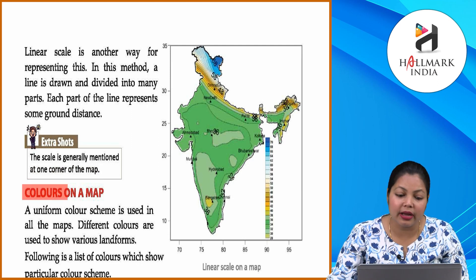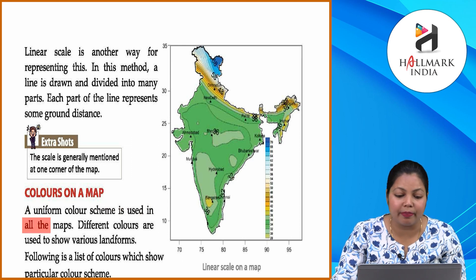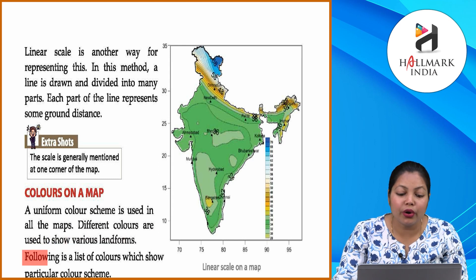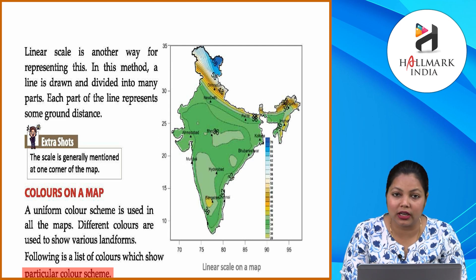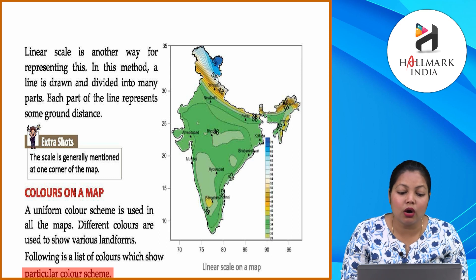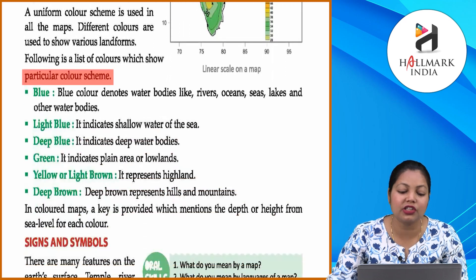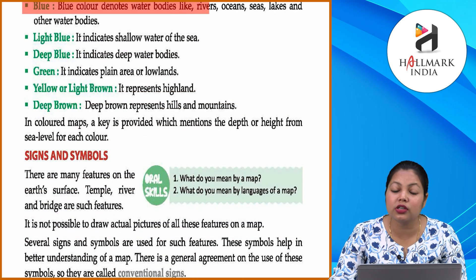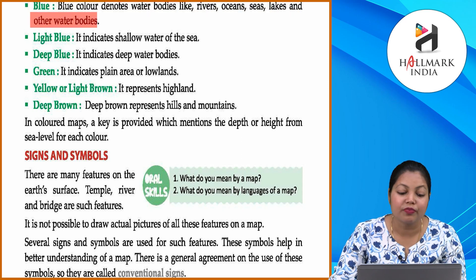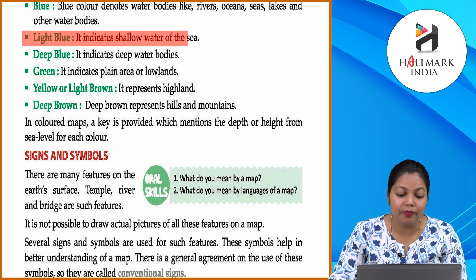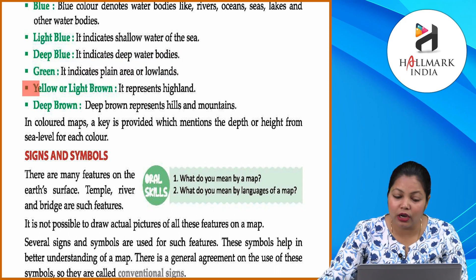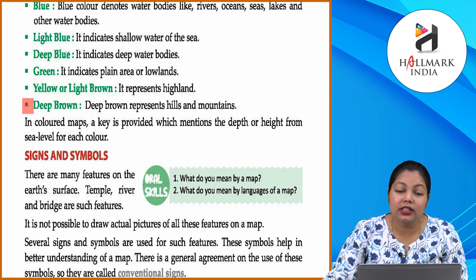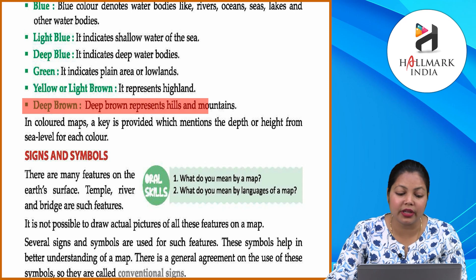Colors on a map: A uniform color scheme is used in all the maps. Different colors are used to show various landforms. Blue color denotes water bodies like rivers, oceans, seas, and lakes. Light blue indicates shallow water of the sea. Deep blue indicates deep water bodies. Green indicates plain areas of low lands. Yellow or light brown represents highlands. Deep brown represents hills and mountains.